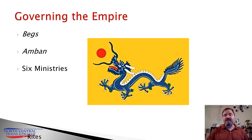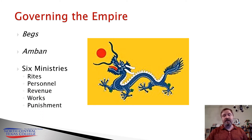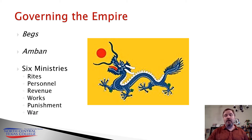The ministries of rites, of personnel, of revenue, of works, of punishment, and of war — these ministries governed the Manchu and the Qing Empire.